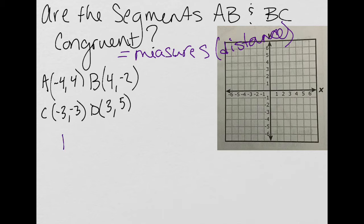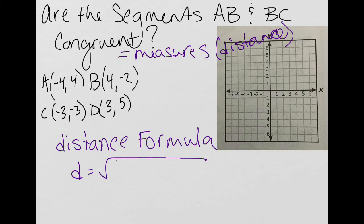So the distance formula, it derived from the Pythagorean theorem, so you could plot these points and use the Pythagorean theorem. But it's d equals the square root of x2 minus x1 squared plus y2 minus y1 squared.